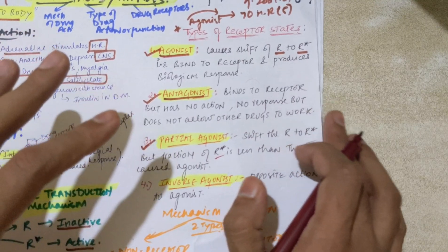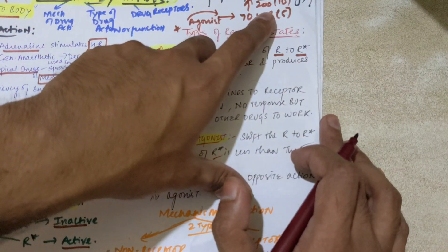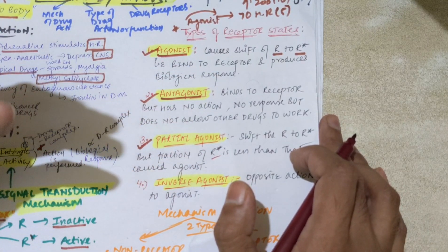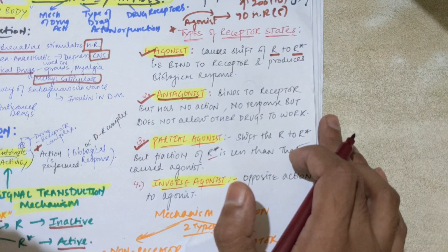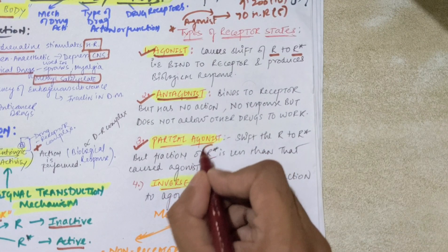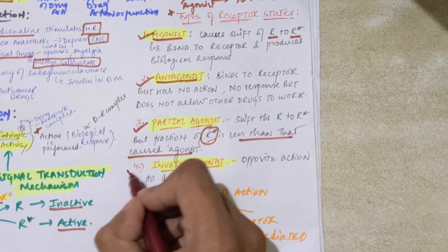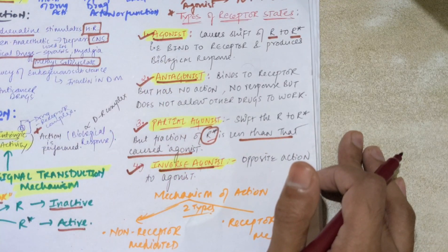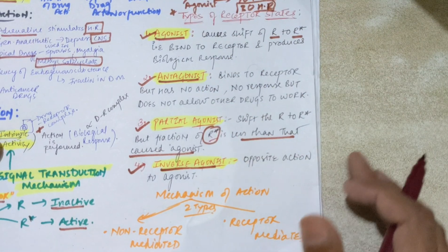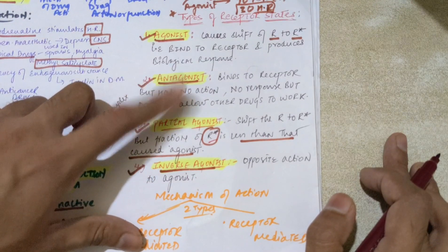Next comes partial agonist. It is like an agonist, but it does not work at the maximum level that a full agonist has — for example, a full agonist increases heart rate to 200, but a partial agonist will increase it to around 140-150. It will not reach maximum level but will reach a sub-maximum level. It shifts R to R*, but the fraction of R* produced is less than that caused by a full agonist. Finally, inverse agonist has the opposite action to an agonist — it decreases the heart rate, which could go down to around 30. This was the concept behind receptor states. Types of antagonism — physical, chemical, physiological, competitive, and non-competitive — will be discussed in later videos.